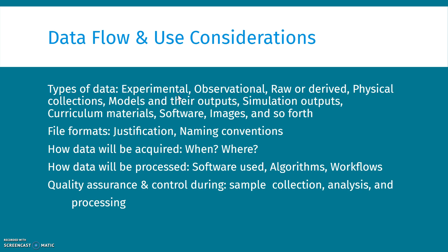The types of data also matter — experimental data, observational data, raw or derived data, physical collections, models and their inputs, simulation outputs, curriculum materials, software, images, and so forth. The file formats, the justification for why a format was chosen, and the naming conventions and why those were chosen all matter. Do they map to some community standards? How data will be acquired — when and where — all things thought through in a proposal but still relate to the data management plan. How data will be processed: the software used, algorithms and workflows, and quality assurance and control during sample collection, analysis, and processing.